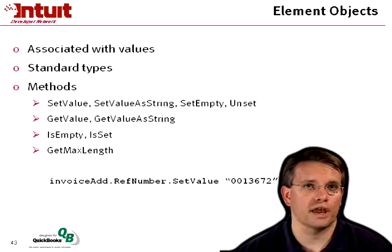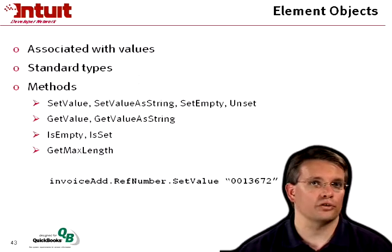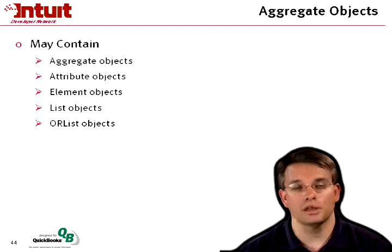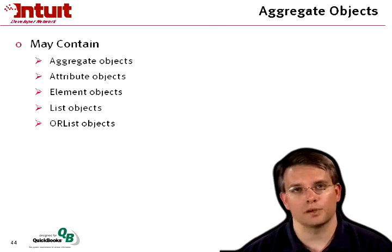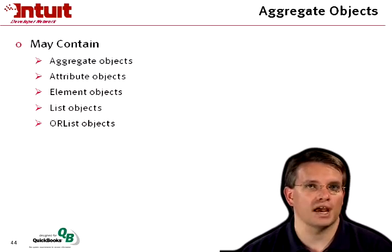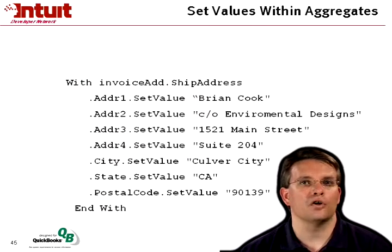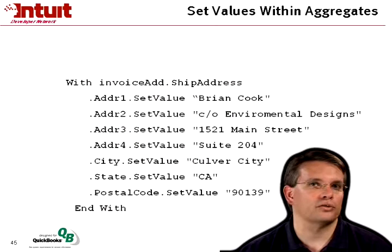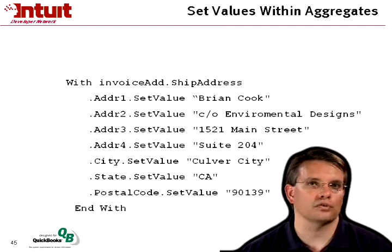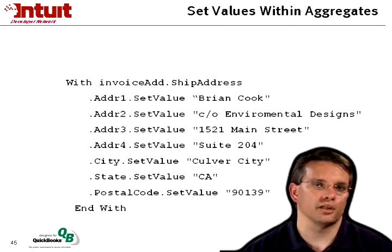There are aggregate objects, and those can contain other aggregate objects, attribute objects, element objects, list objects, and or-list objects — just like we saw with the request message set object. For example, here's the shipping address in an invoice add: I set addr1, addr2, addr3, city, state, and postal code by referencing each of those sub-elements.